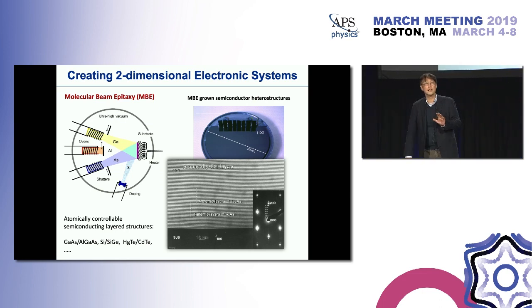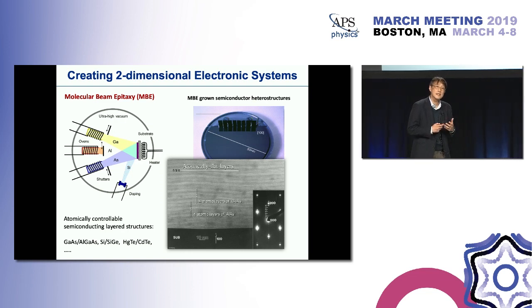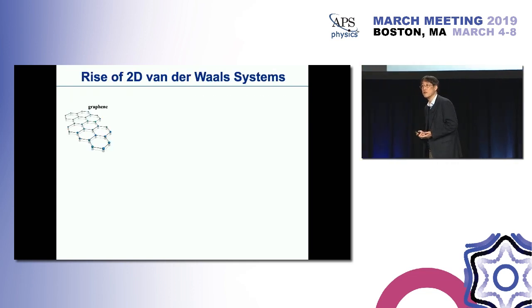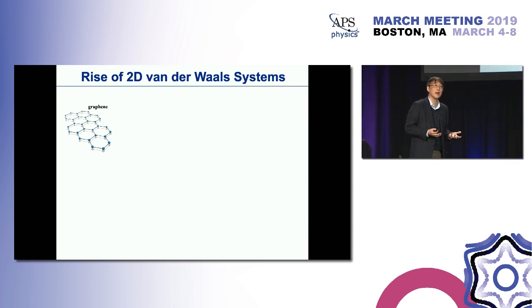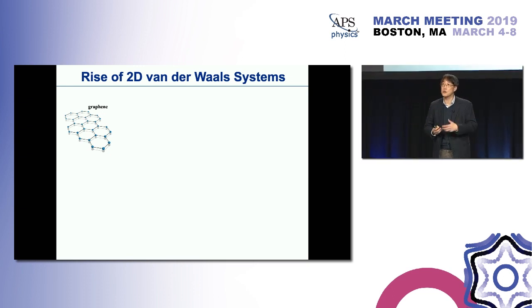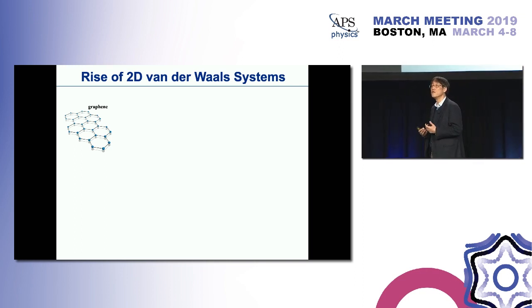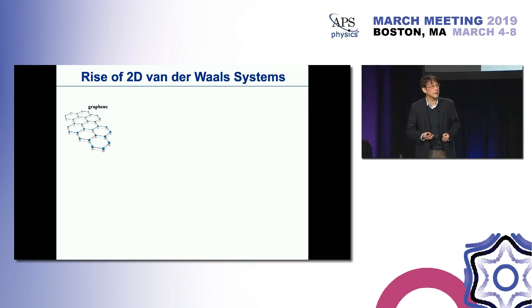The story I want to focus on today is related to semiconductor heterostructures but in somewhat different directions. That story is starting with probably about 15 years ago, when Kostya Novoselov and Andre Geim first demonstrated that a different type of two-dimensional system can be produced and studied. Graphene, extracted from graphite using simple mechanical exfoliation, already started to produce quite exciting new physics, such as the Dirac phenomena and quasi-relativistic carrier dynamics. Those things really started to excite the field.